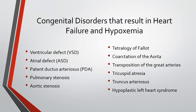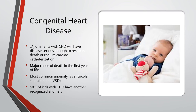Congenital heart disorders that result in heart failure and hypoxemia include VSD (ventricular septal defect), ASD (atrial septal defect), PDA (patent ductus arteriosus), Tetralogy of Fallot, TGA (transposition of the great arteries), and coarctation of the aorta. Congenital heart disease affects about one third of infants seriously enough to result in death or require cardiac catheterization, and it's a major cause of death in the first year of life. Prematurity has a higher prevalence rate, and the most common anomaly is ventricular septal defect. Twenty-eight percent of kids with CHD have another recognized anomaly.